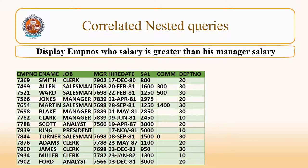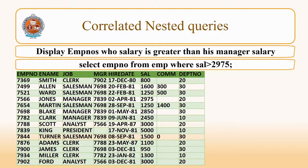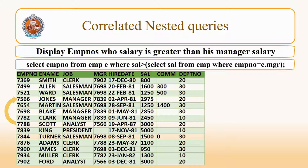Let us see another type of nested query known as a correlated nested query. Generally in a nested query, values of the inner query are substituted in the outer query. But in a correlated nested query, the outer query results are substituted in the inner query. The example is: display employee numbers whose salary is greater than their manager's salary. For each employee, obtain the manager number and check the salary. The query is: SELECT SAL FROM EMP WHERE EMPNO equals the manager number of that employee. Therefore the outer query result is substituted in the inner query.